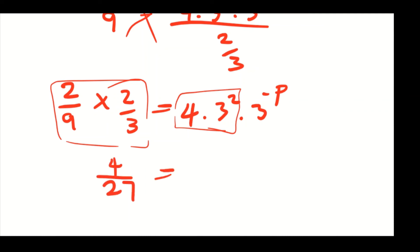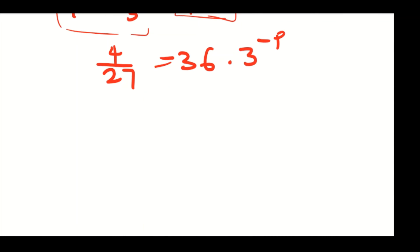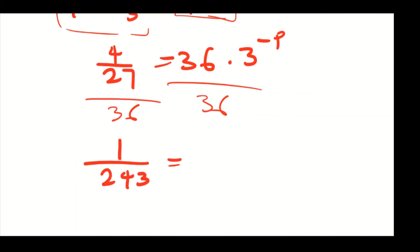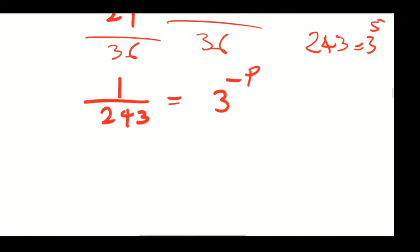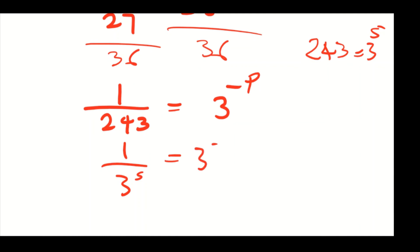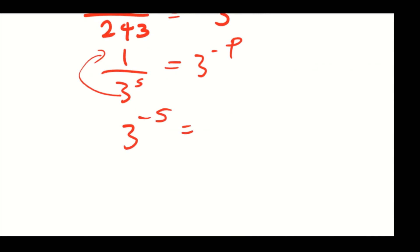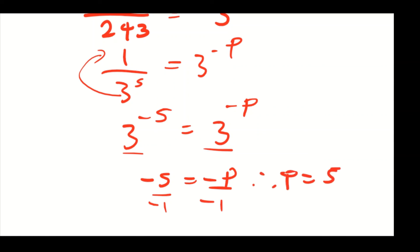Dividing both sides by 36 gives 1 over 243 equals 3 to the power of minus p. Since 243 equals 3 to the power of 5, we write 1 over 3 to the power of 5 equals 3 to the power of minus p, which gives 3 to the power of minus 5 equals 3 to the power of minus p. Since the bases are the same, we equate exponents: minus 5 equals minus p. Dividing both sides by negative 1 gives p equals 5.